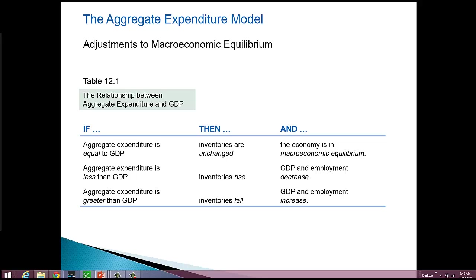That increases employment. So there's your relationship between aggregate expenditures and GDP. Remember, it all comes down to what's happening with inventory. If you understand that aggregate expenditure is tied to planned inventories and GDP is tied to actual inventories, you can talk yourself through it and figure out what's going on. Get a real solid understanding of this relationship.